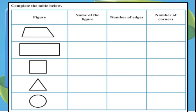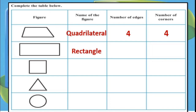Here you can see a table — complete the table below, which is in your textbook on page number 3. You have to write the name of the figure, count the number of edges, and number of corners. I will do one for you — this is the quadrilateral, it has 4 edges and 4 corners. The second figure is rectangle with 4 edges and 4 corners. The rest 3 figures you have to name, write the edges, and write the number of corners on page number 3.